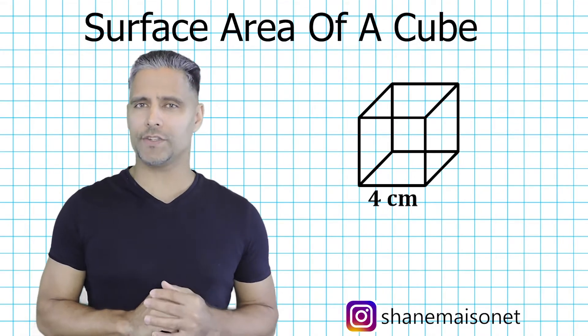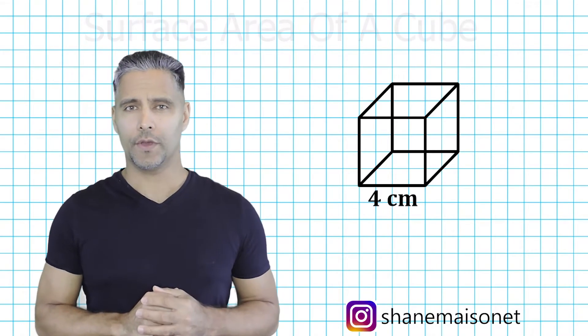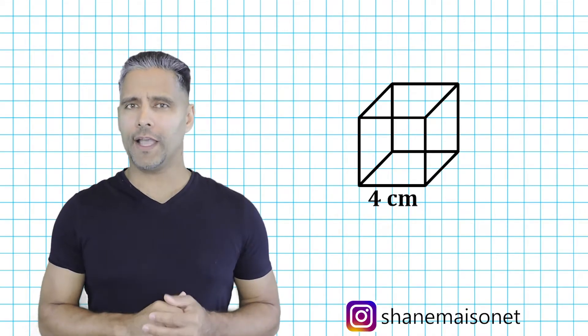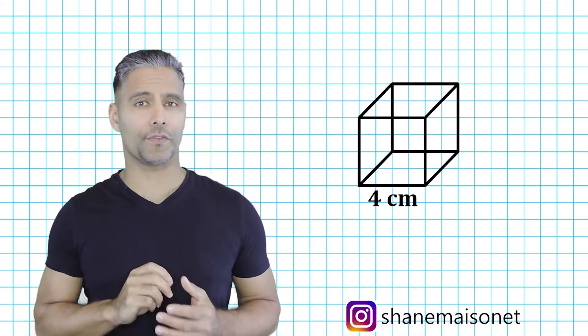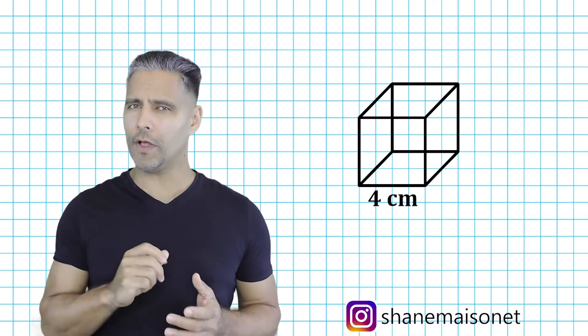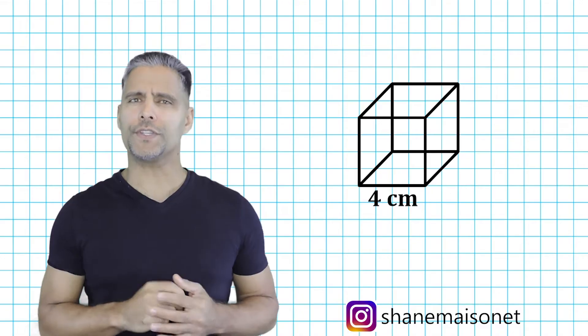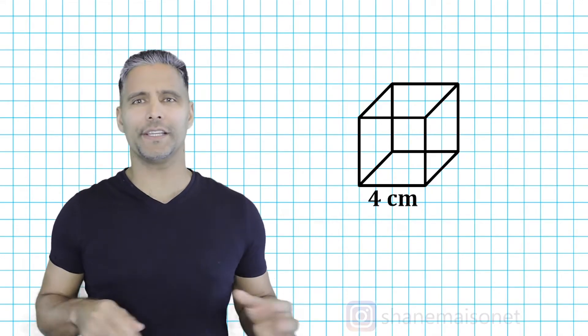Now, we should remember that all edges of a cube are equal in length. So the length, the width, and the height of any cube are going to be equal. Now, we must be careful not to mix up the surface area of a cube with the volume of a cube. Surface area and volume are two completely different measures.